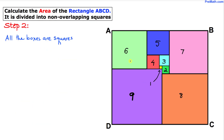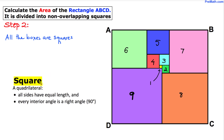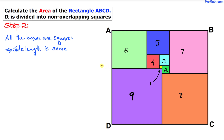We know that all these boxes are squares. By definition of a square, all sides have equal lengths — so the side length of each and every one of these squares is going to be the same.